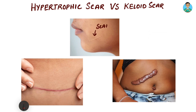As you can see over here, this is a normal scar. But whenever there is an excess of TGF-beta, or tumor growth factor beta, it leads to or gives rise to something known as a hypertrophic scar or a keloid scar.